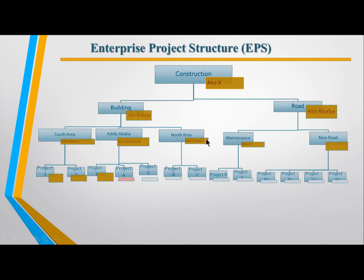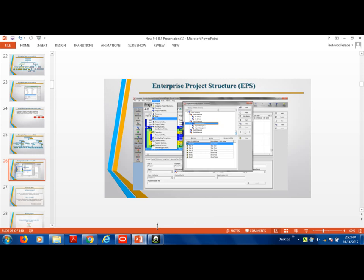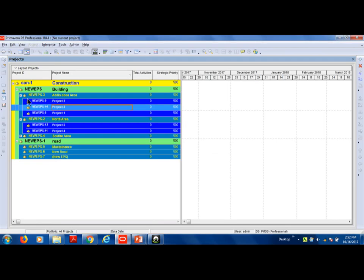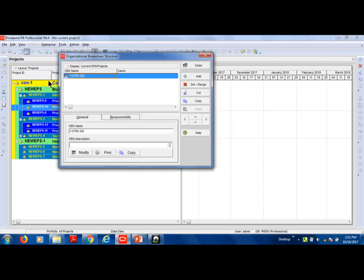This is the level of the department. The level of the department is represented. If you want to develop, you can create it. The PCX license will be developed. The entire enterprise project structure is developed, and the next right step is to create the Organization Breakdown Structure (OBS).